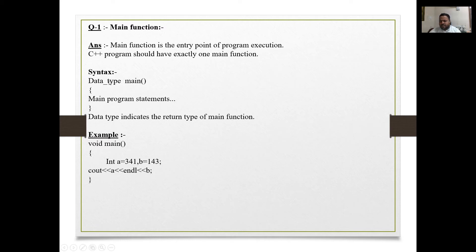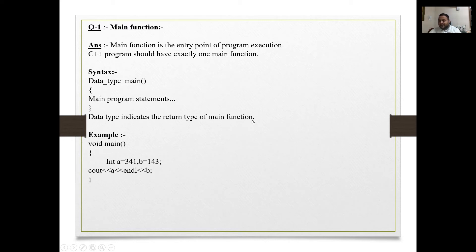The syntax of the main function is: first the data type, which may be void or int, then 'main', then curly braces open, then the main program statements, then curly braces close. The data type indicates the return type of the main function — it could be getch() or return 0.